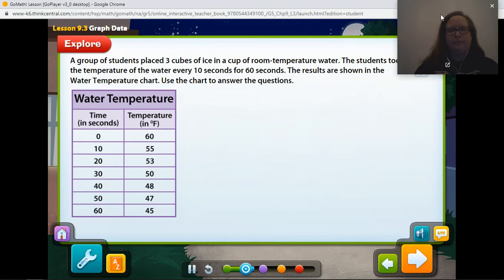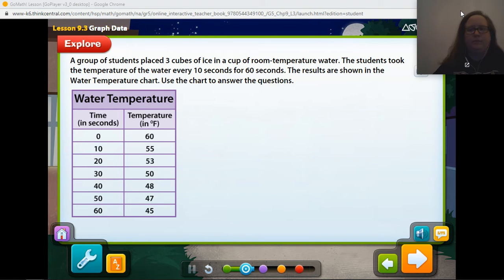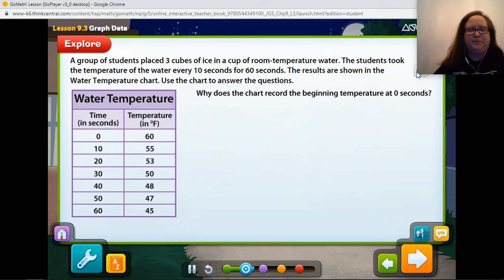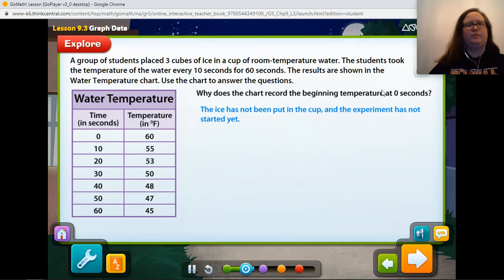Let's observe an experiment and then use a chart to answer questions. A group of students placed three cubes of ice in a cup of room temperature water. The students took the temperature of the water every 10 seconds for 60 seconds. The results are shown in the water temperature chart. Use the chart to answer the questions. Why does the chart record the beginning temperature at 0 seconds? The beginning temperature is recorded at 0 seconds because the ice has not been put in the cup and the experiment has not started yet.